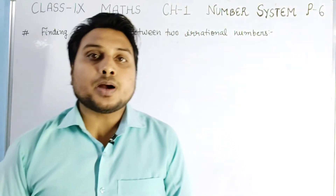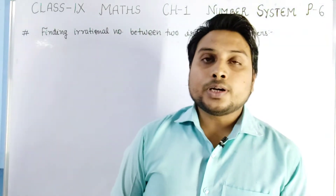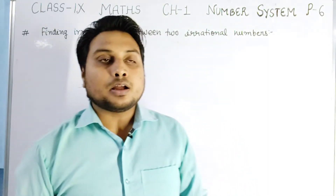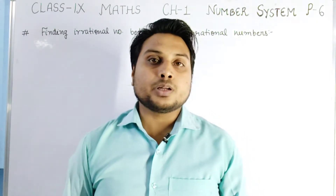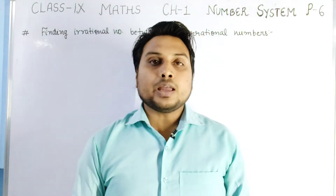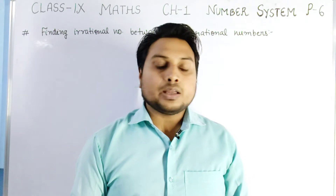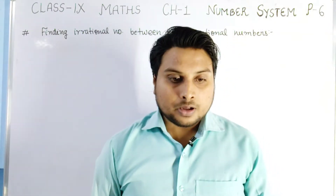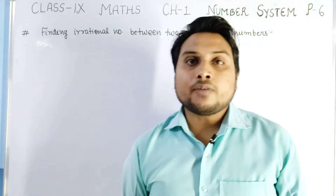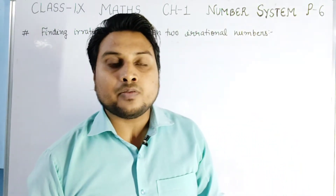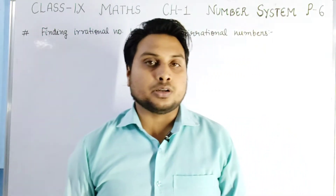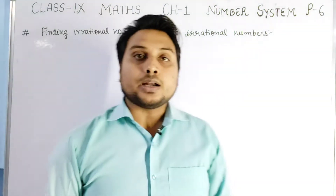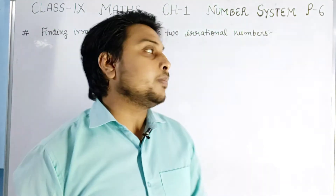Hello dear students, welcome to the sixth part of Chapter 1 Number System. We have covered basic definitions, how to find rational numbers between two rational numbers, representation of rational numbers, irrational numbers, how to represent irrational numbers on the number line, and in part 5 we covered real numbers and their decimal expansion. From NCERT we have covered till Exercise 1.2.